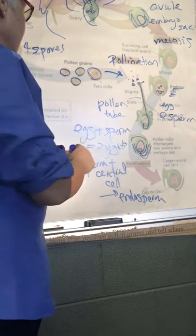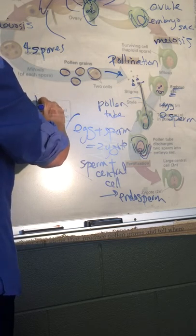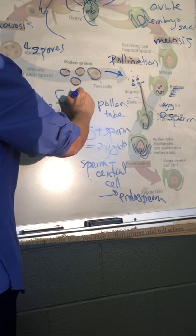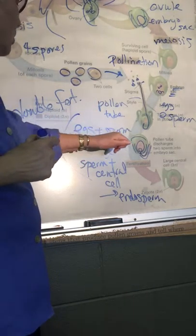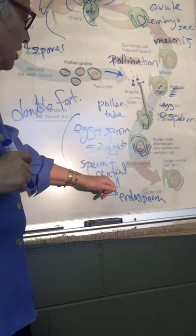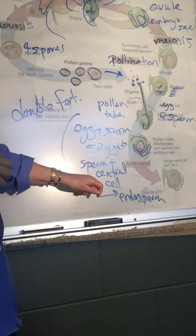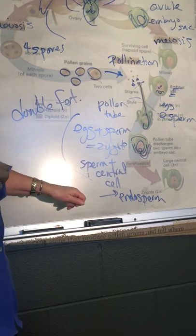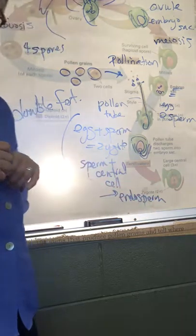So this is why we call it double fertilization, because we have two events where sperm are involved. The sperm fertilizing the egg produces a zygote. The sperm fertilizing two other cells within the embryo sac produces what will be the food material in the seed—it's called the endosperm.